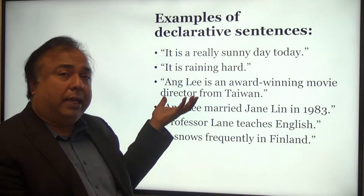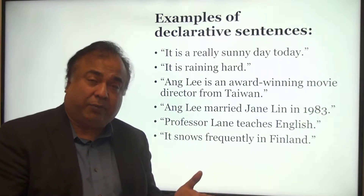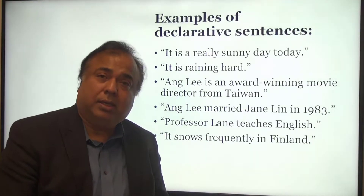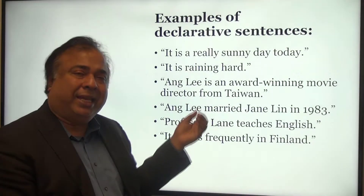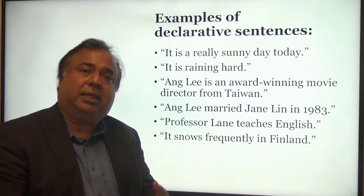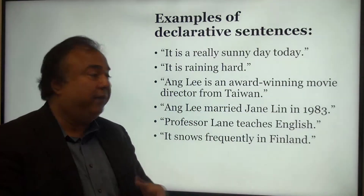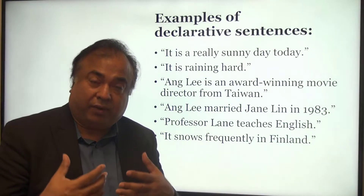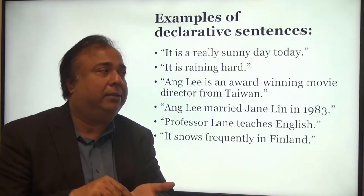A very famous movie director, Ang Lee — if you watch Hollywood movies, he has directed quite a few phenomenal movies: The Life of Pi, Brokeback Mountain, Crouching Tiger Hidden Dragon, which was his first venture into Hollywood movies. He's from Taiwan. We can't make it up because a person has to be born somewhere. He was not born in the USA; he was born in Taiwan, and he's an award-winning movie director. His wife's name is Jane Lynn. They married in 1983. That is a verifiable fact — you could ask them to produce their marriage certificate, which will have the date and the year.